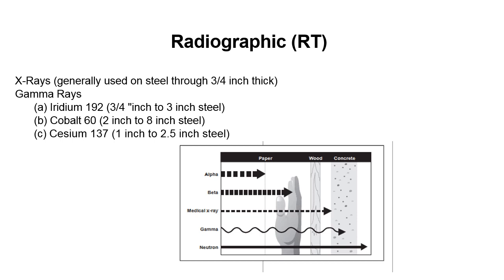This gives you a general idea of the penetrating power of different forms of radiation. Alpha radiation will be stopped by a piece of paper. Beta radiation is stopped by the thickness of your hand. Medical X-rays will go through your hand and through wood. Gamma radiation will go through your hand, the wood, and be stopped by concrete. Neutron radiation has significantly more penetrating power. This illustrates the differences in the amount of energy involved with the different forms of radiation.